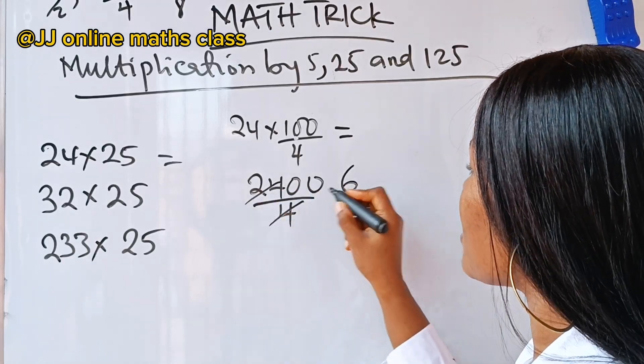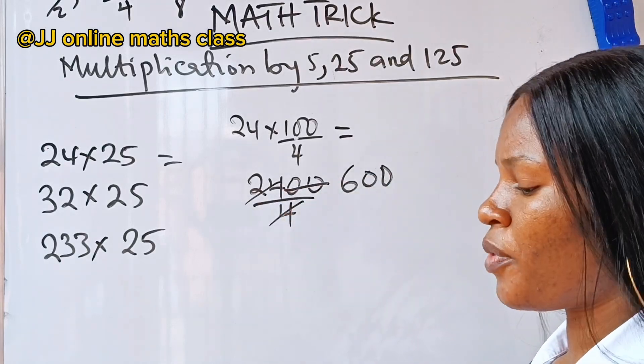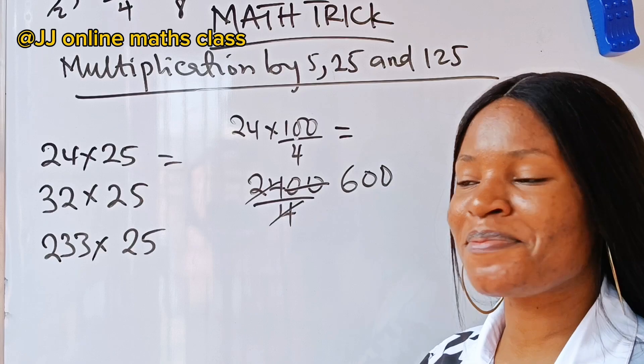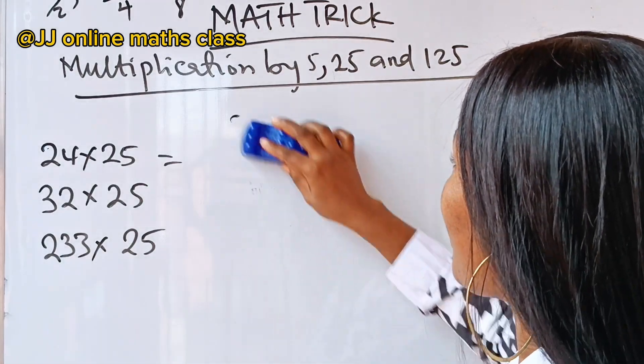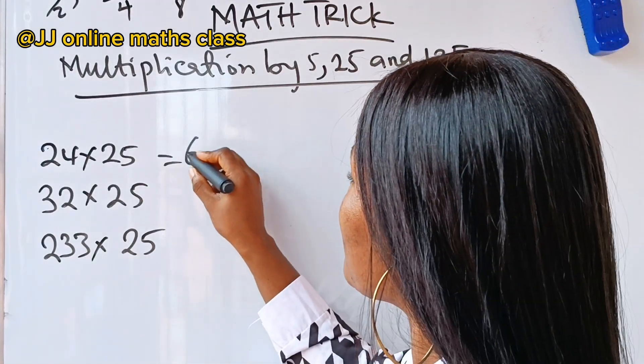Now, when 4 divides 24, you have 6. Divide this, you have 00. So, it means that 24 multiplied by 25 is just 600. As easy as that, right? It's very easy.